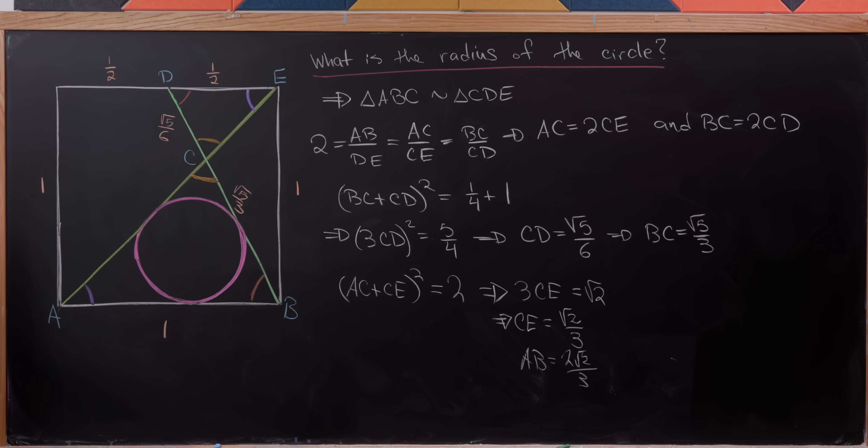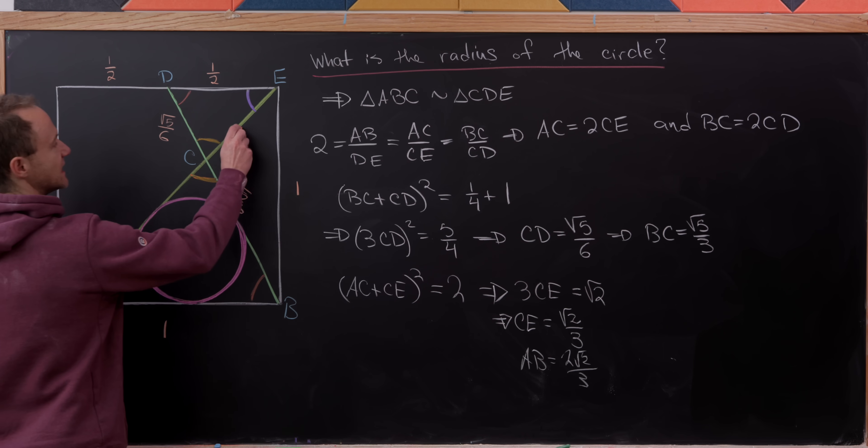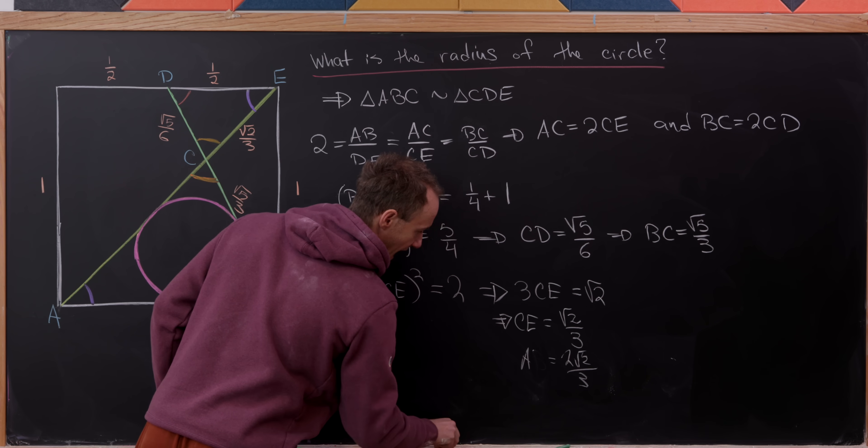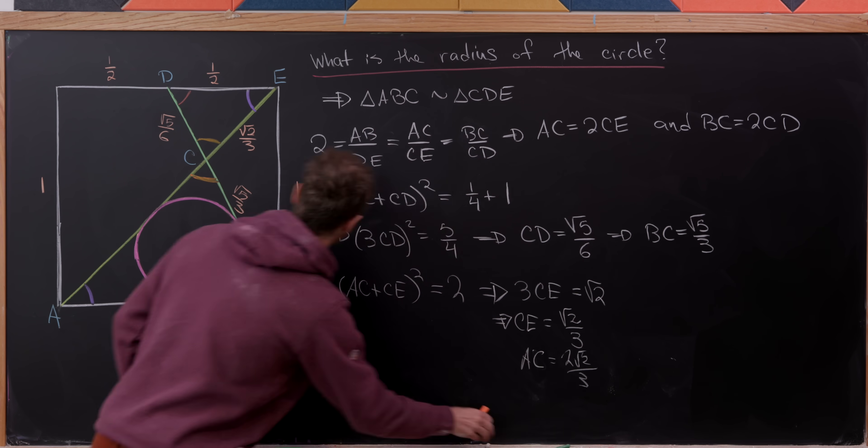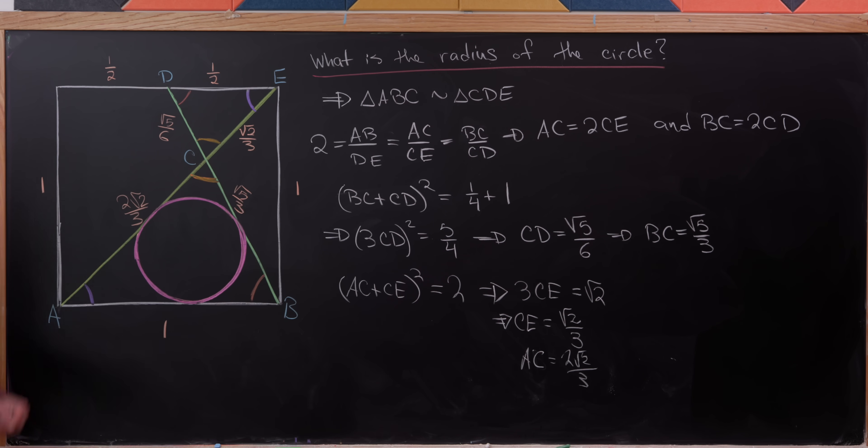So let's get those into the situation as well. So this CE is the square root of 2 over 3. And then this AC is 2 times the square root of 2 over 3. So now we've completed the lengths of all of the necessary line segments, and we're ready to finish it off.